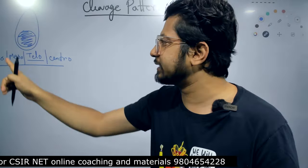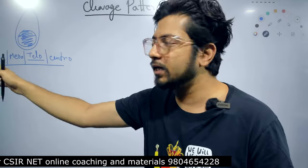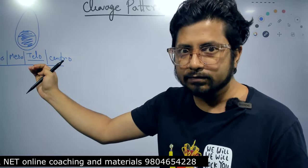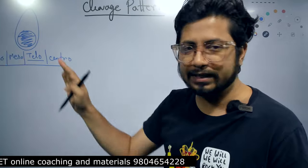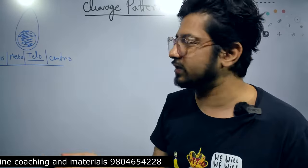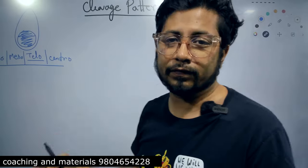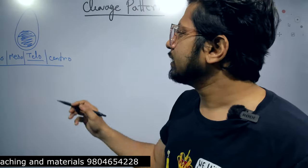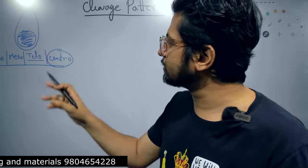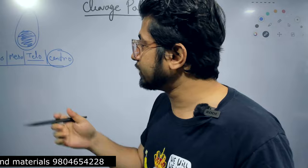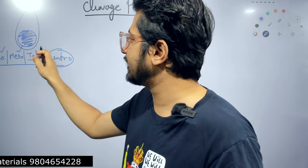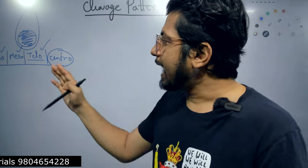We have four different kinds of eggs depending upon the presence of the yolk. If the yolk is equally distributed throughout the egg, that is isolecithal. If it is distributed near the middle, that is mesolecithal. If it is concentrated at one tail of the egg, that is telolecithal. If the yolk is present at the center of the egg, that is centrolecithal - the example being Drosophila insect eggs. We are more focused on isolecithal, mesolecithal, and telolecithal.